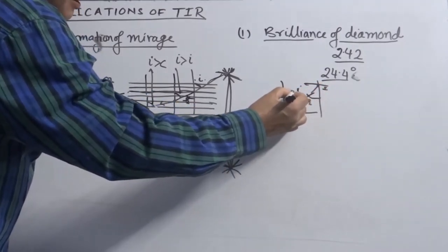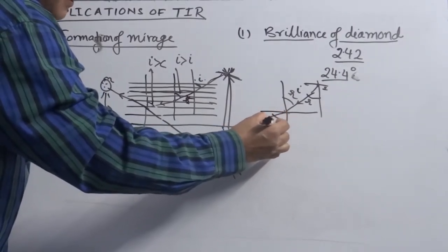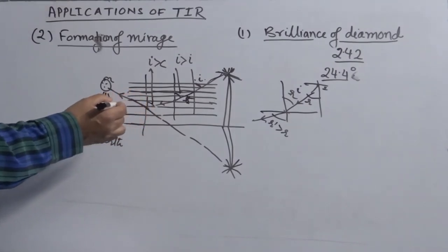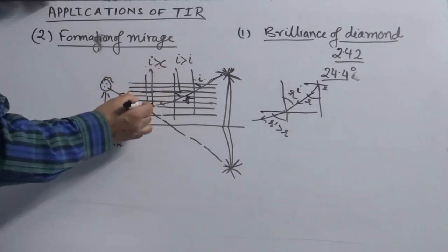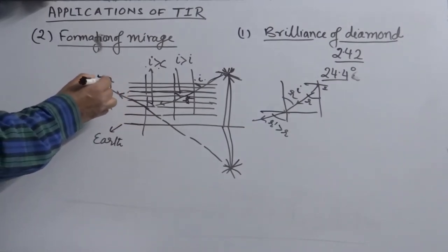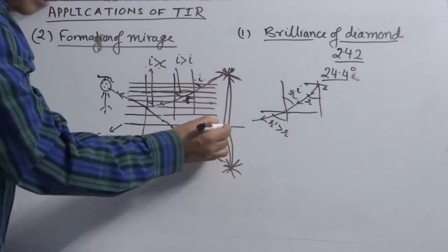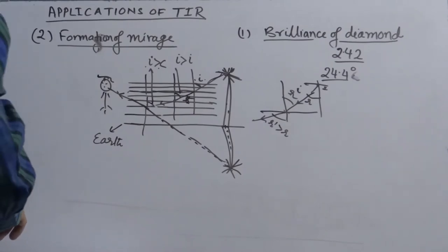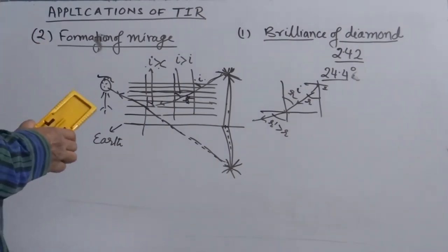At a certain layer, the angle of incidence becomes greater than the critical angle, so the ray of light instead of refracting gets totally internally reflected back upward. Any person standing nearby, whose eyes receive these reflected rays, sees the image of the top of the tree near the ground. This image appears similar to a tree reflected in a pond, and so the person feels there must be a presence of water — this is mirage.